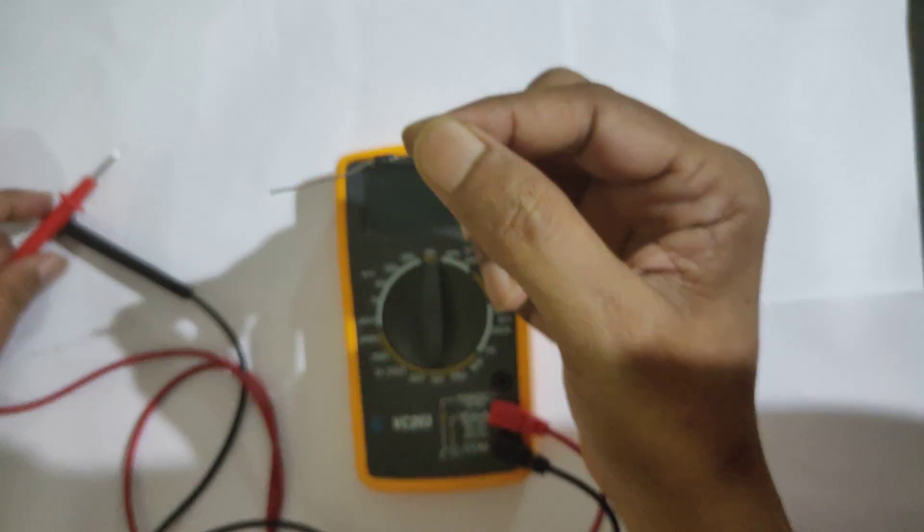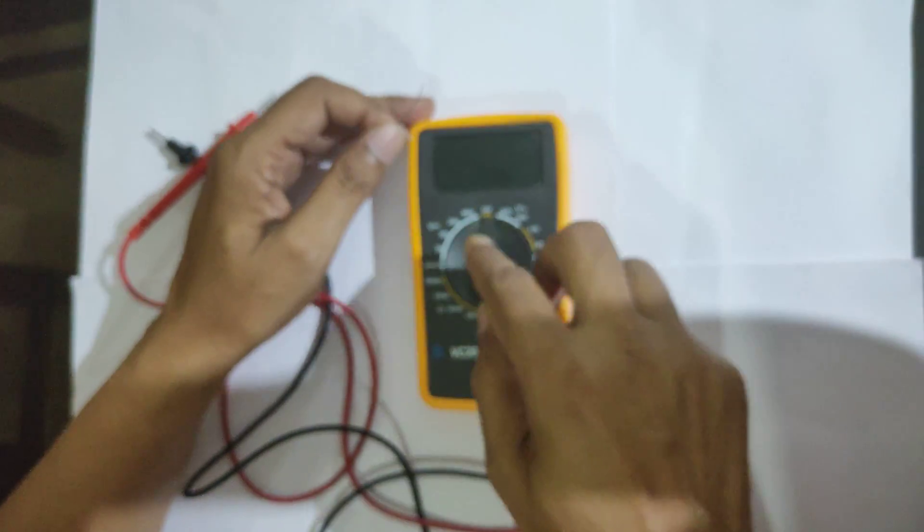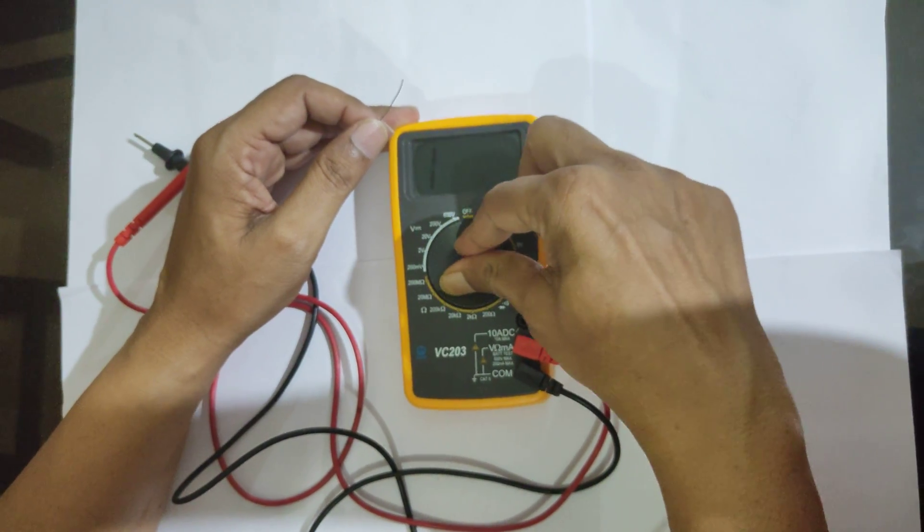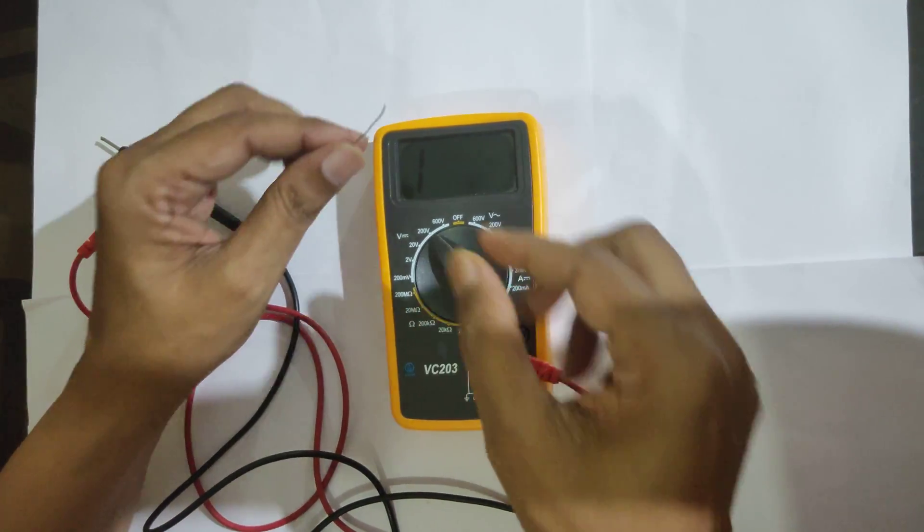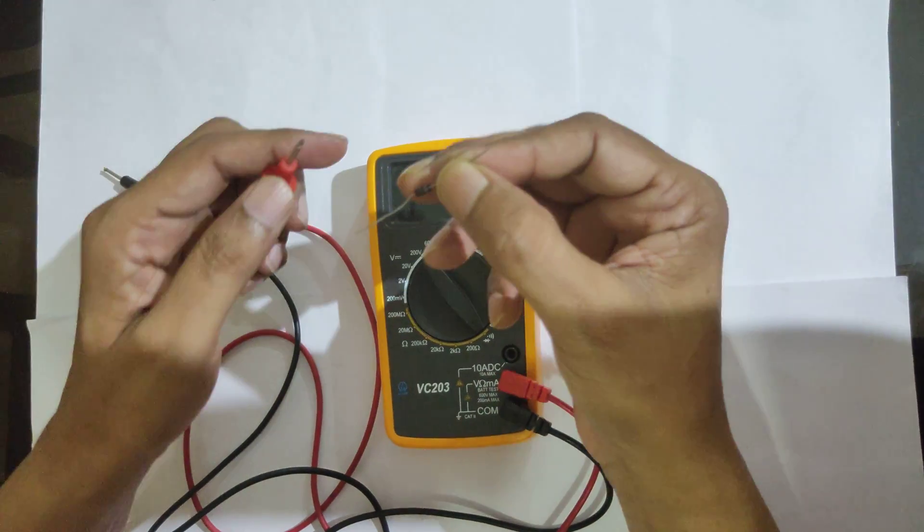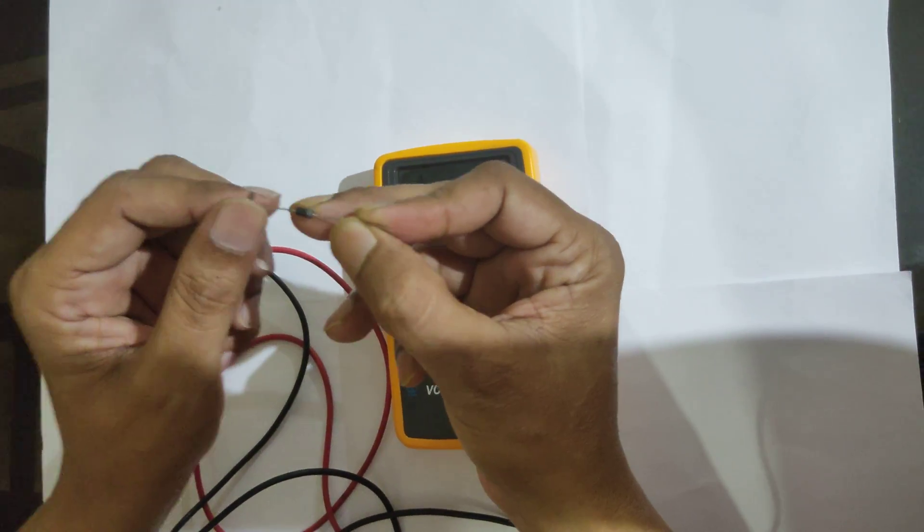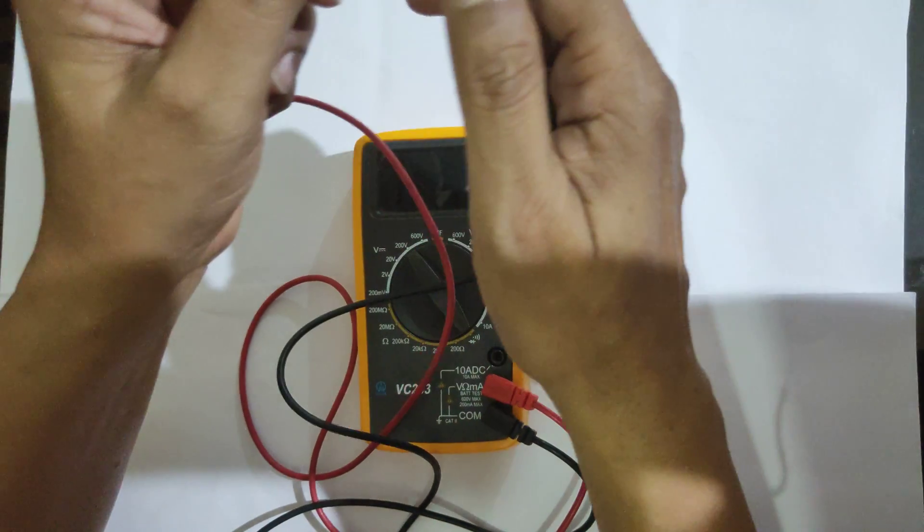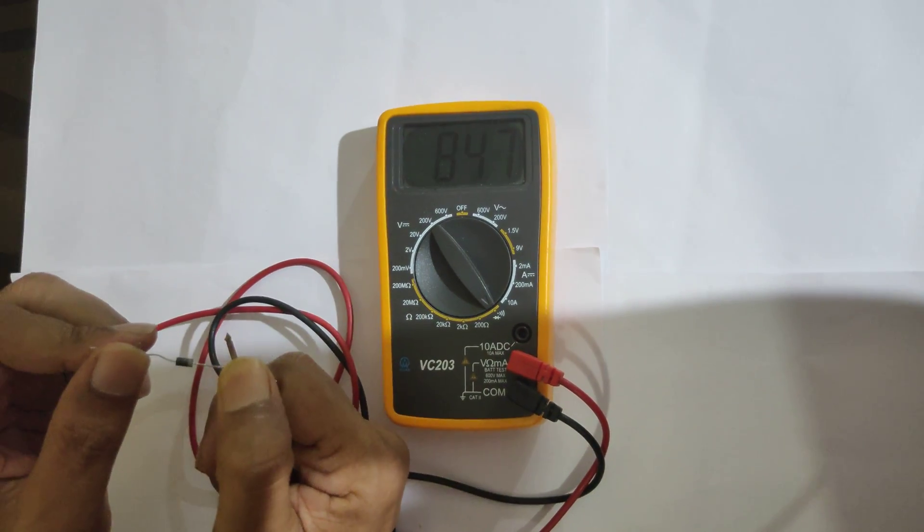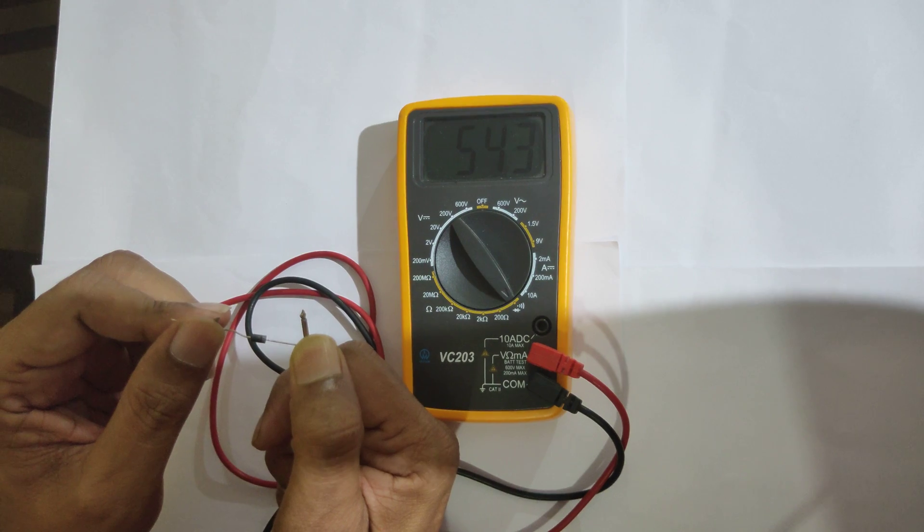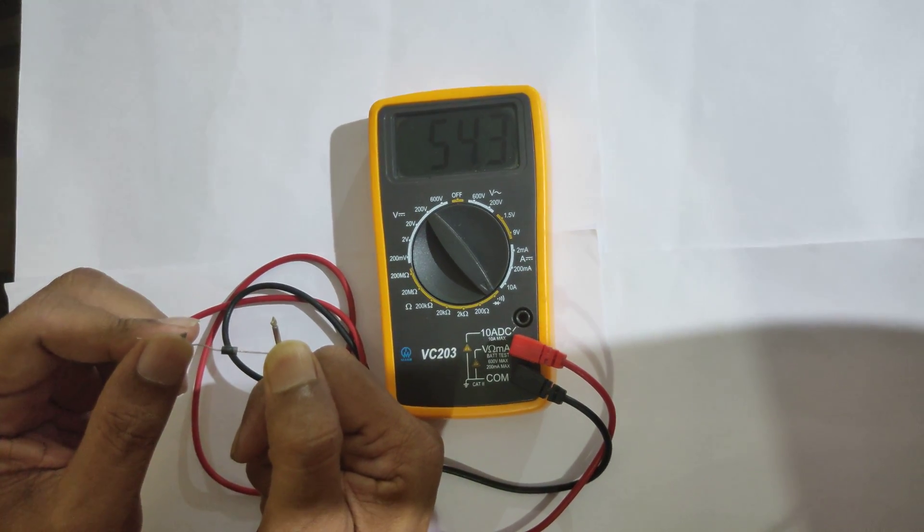You see, I am connecting it. This is the dial. I am taking the dial to the diode mode. I am connecting the P to the positive and N to the negative and the diode is forward biased and you can see the conduction of current in the multimeter.